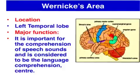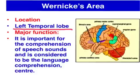Wernicke's area, on the other hand, for 95% of the population is located just near the auditory cortex in the left temporal lobe. A very simple way of understanding its major function is we call it the language comprehension centre.